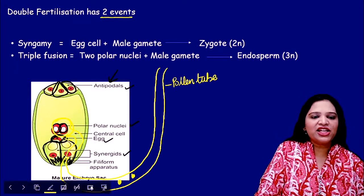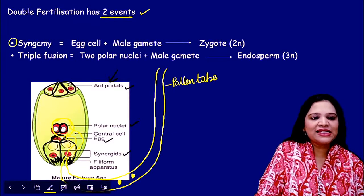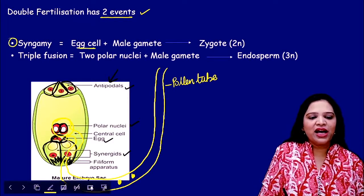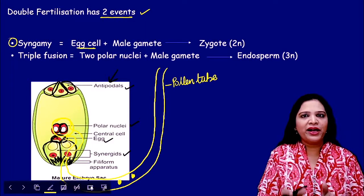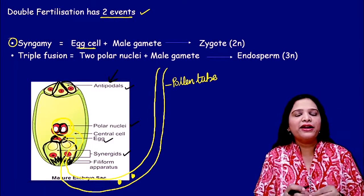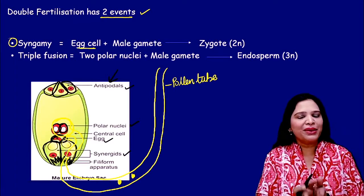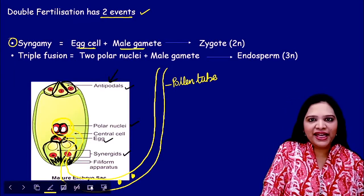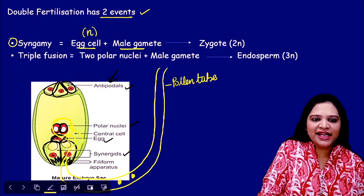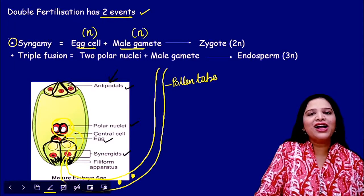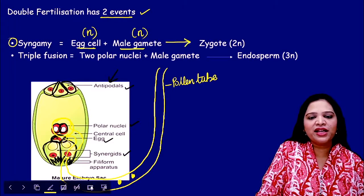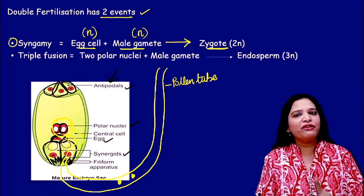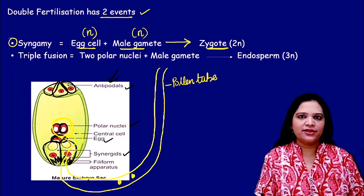Double fertilization has two important events. The first is syngamy. The egg cell is at the micropylar end; the pollen tube ruptures and releases a male gamete. One male gamete fuses with the egg cell — the egg cell is n (haploid) and the male gamete is also n — and they join together to form a diploid zygote (2n). This is the first event occurring in double fertilization.